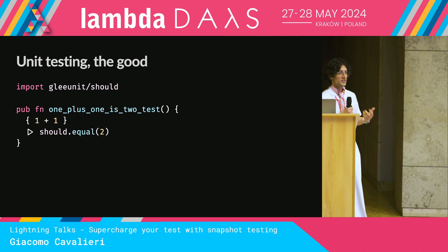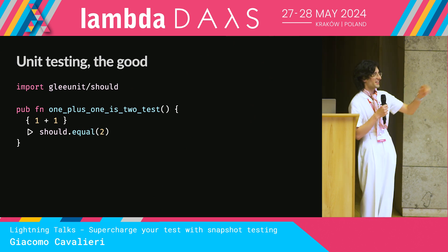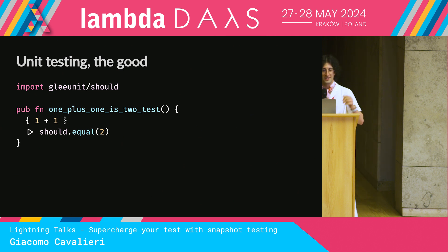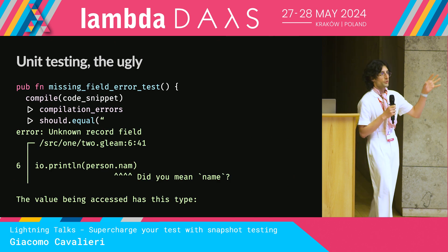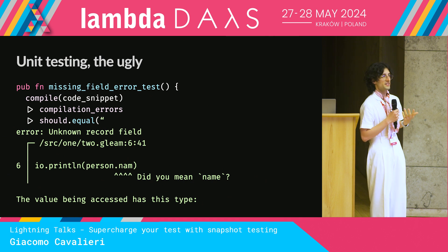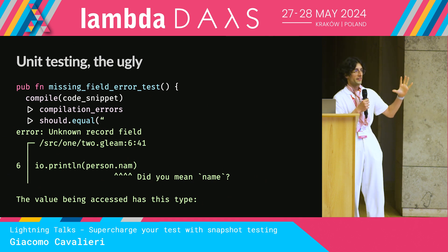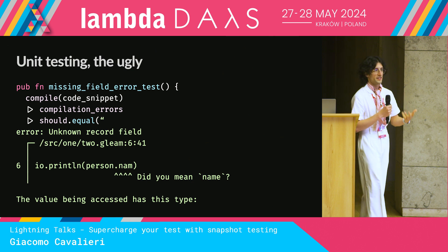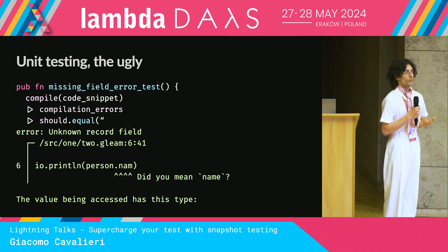Imagine a more complex example, like you're writing a programming language — I think that's a fitting example for the Lambda Days crowd, who hasn't — and you want it to be statically typed, to have great error messages, and of course you need to be testing that. So you compile your program, you get the error messages, and now you need to write a test. You need to say: my error message looks exactly like this, I want it to present this kind of information, it needs a specific wording, so on and so forth.